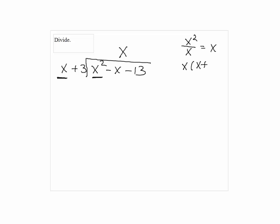Then, you multiply the X by X plus 3. So we have X squared plus 3X that goes on the bottom.